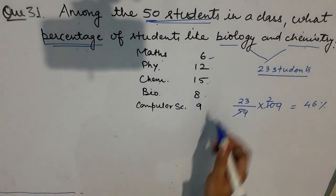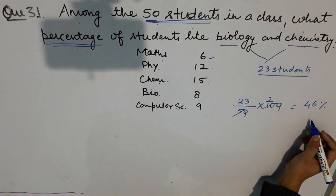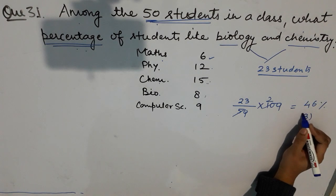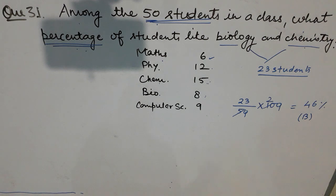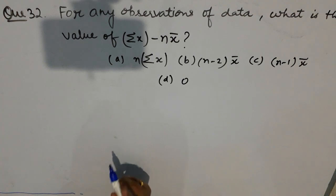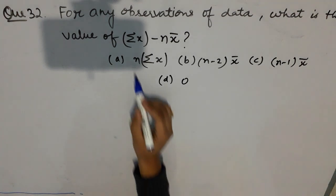So 46% of the students like biology and chemistry. In the question paper it was option number B. Now we have question number 32, which says: for any observations of data, what is the value of the summation of x minus n into x̄?